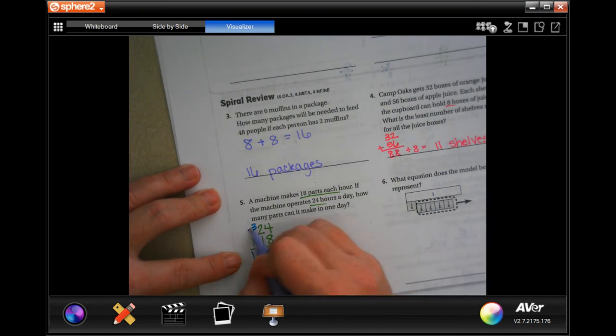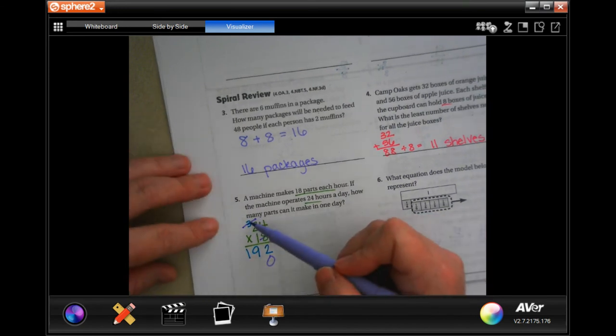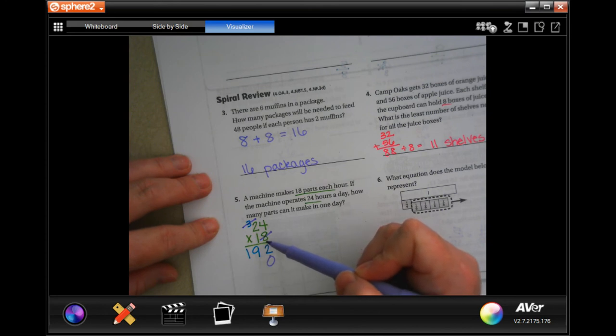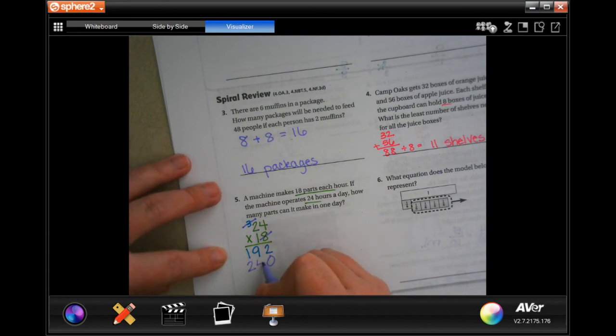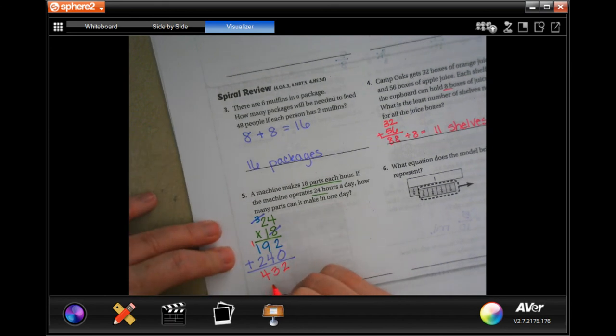Now we're going to tick-tac-toe. We use that so we remember to cross off the number we already carried. We don't want to use that eight anymore. I need a placeholder zero, and then one times 24 is going to be 24. Add them up. Two plus zero is two, nine plus four is 13, carry that one. One plus one is two, plus two more is four. And that's going to be 432 parts.